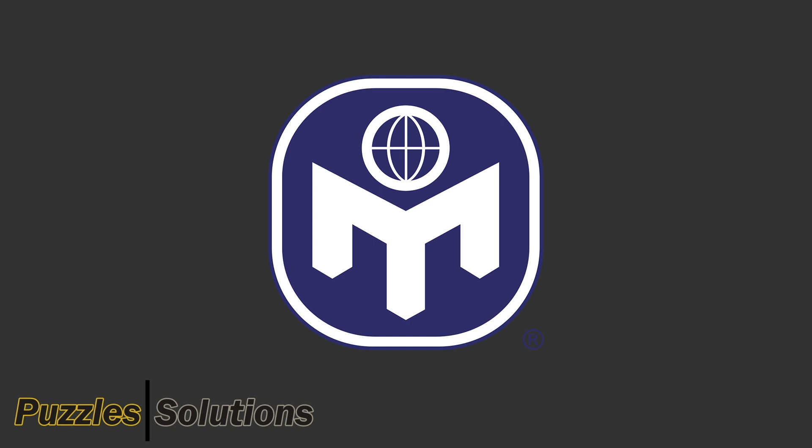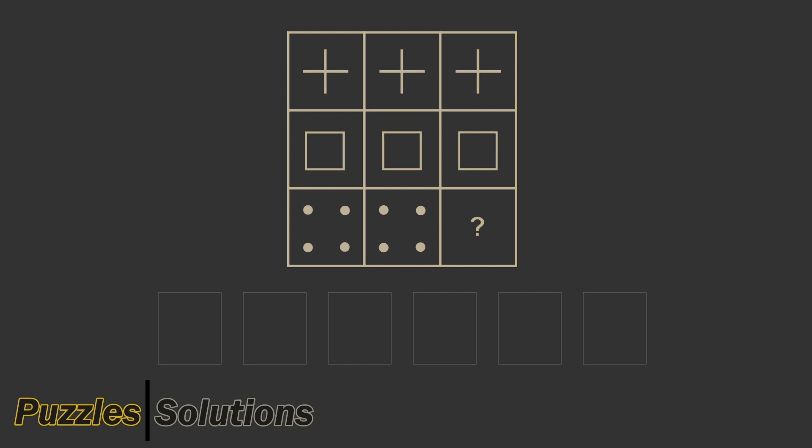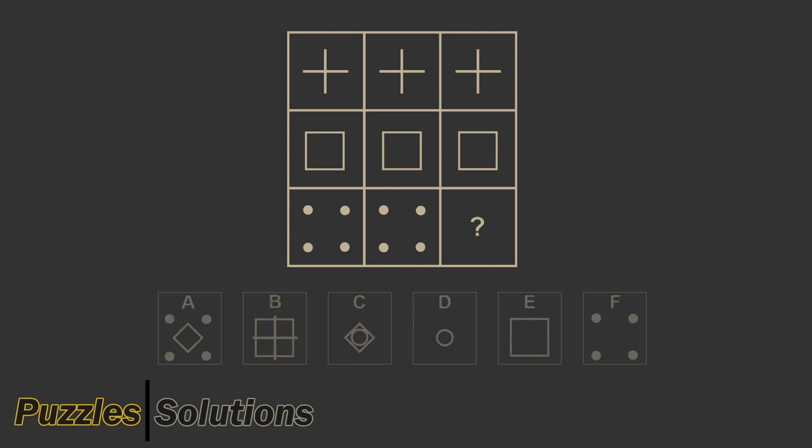Before I start the video, I have to say that Mensa is different from country to country, so the physical IQ test you have to take might be different depending on where you live. Mensa uses Raven matrices, which is a form of IQ test where each puzzle is a 3x3 matrix containing 8 images and one question mark. Under the matrix you find the answer options, and the correct answer should replace the question mark while conserving the overall pattern in the matrix.